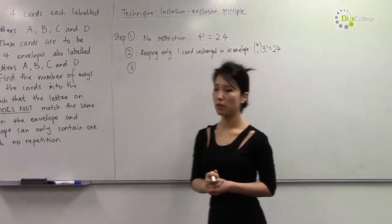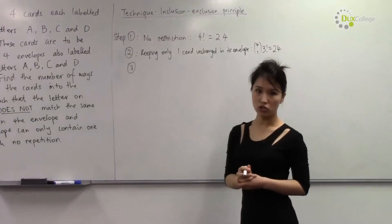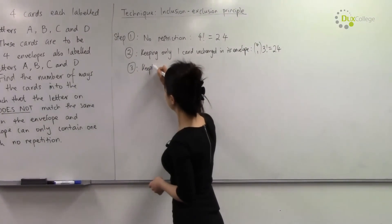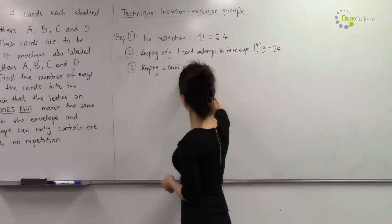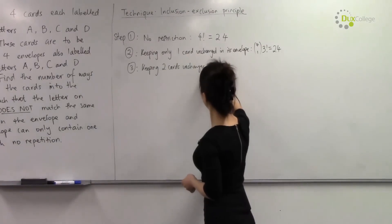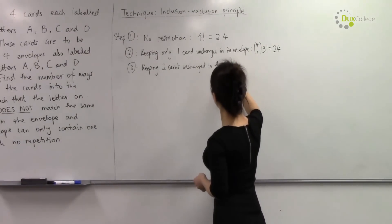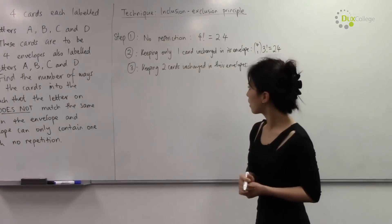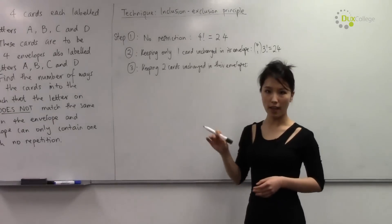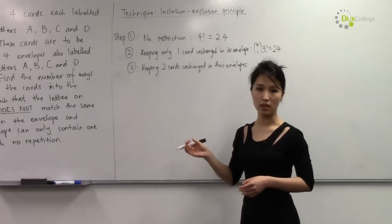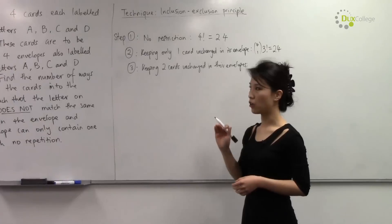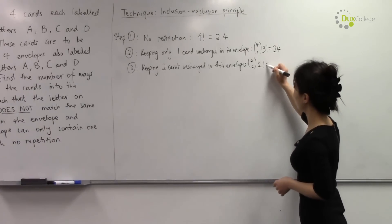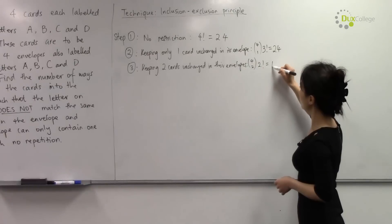Step three is to keep two cards unchanged in their envelopes — for example, keeping card A in envelope A and card B in envelope B unchanged, and arranging the remaining two cards. So we have C(4,2) times two factorial, that's six times two, which is 12.